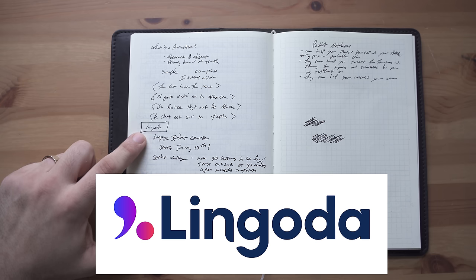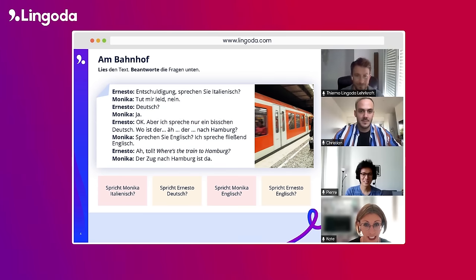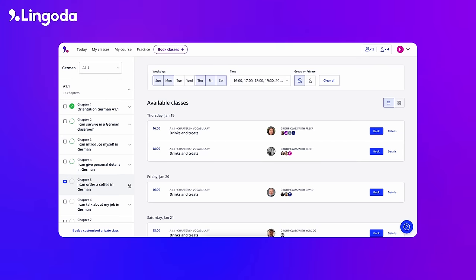But thankfully, I found Lingoda. Lingoda is a language school with 1,100 teachers, live Zoom classes available 24-7, with small groups of native-level teachers, and guided curriculum for fast progress.